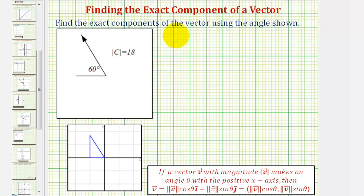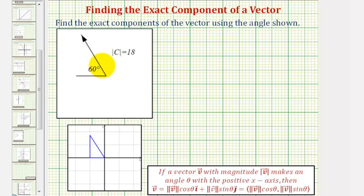We're going to find the exact components of the vector using the angle shown. Notice how we're given the magnitude of vector C is 18. We're also assuming the initial point of the vector is at the origin on the coordinate plane.